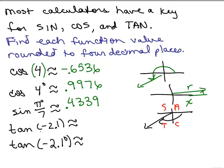We're going to take the tangent of negative 2.1. When I round it, I get 1.7098.